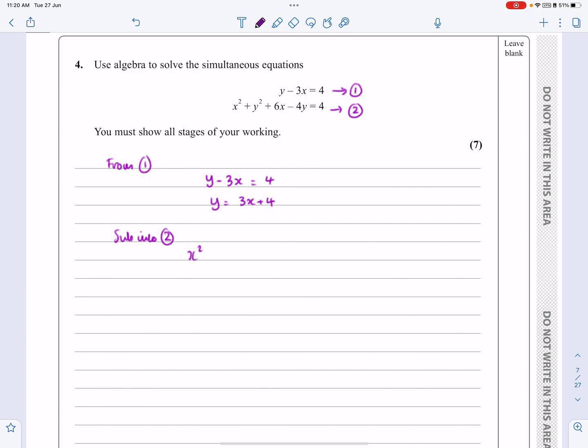So I've got x² + y², but that's (3x + 4)² + 6x - 4(3x + 4) = 4.